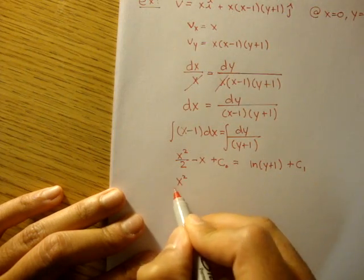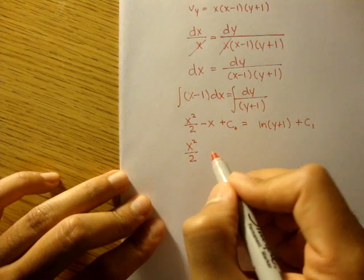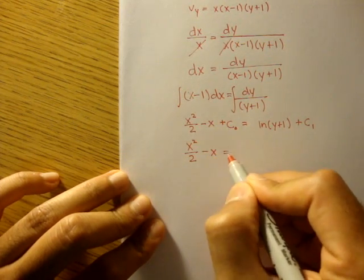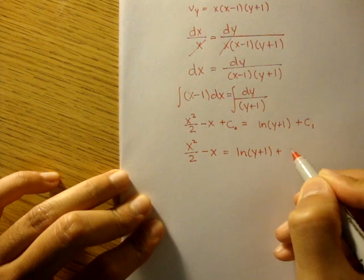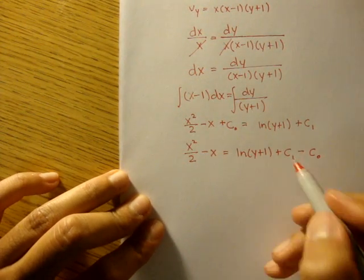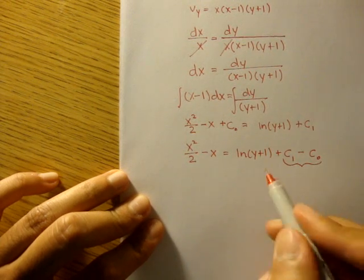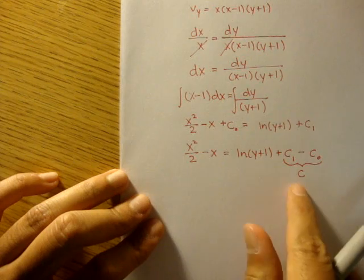So we'll get x squared over 2 minus x is equal to ln of y plus 1 plus c1 minus c naught. And here, constant minus a constant gives us just a constant. We'll just call it c, no subscript.